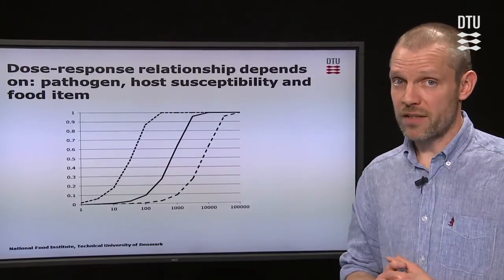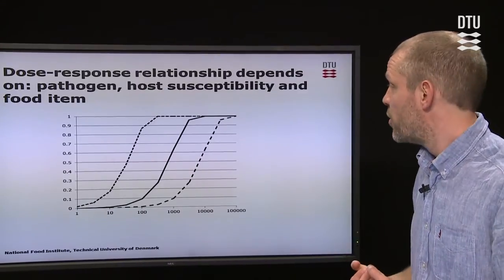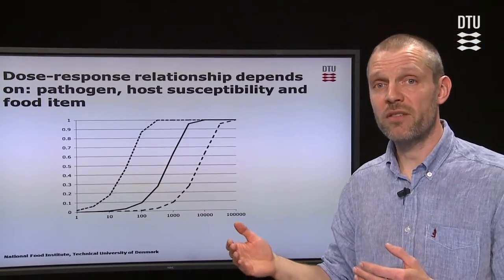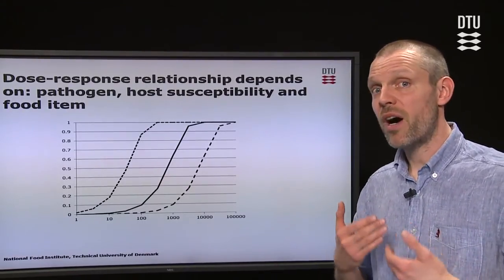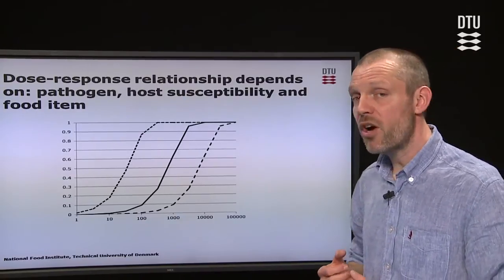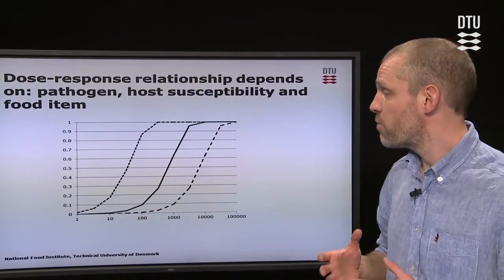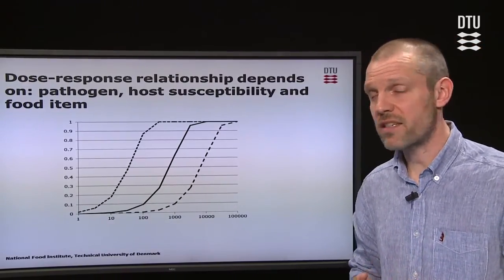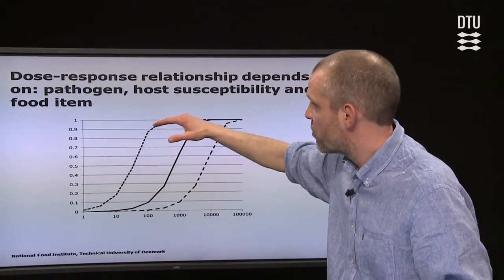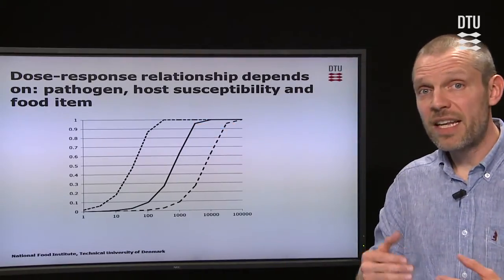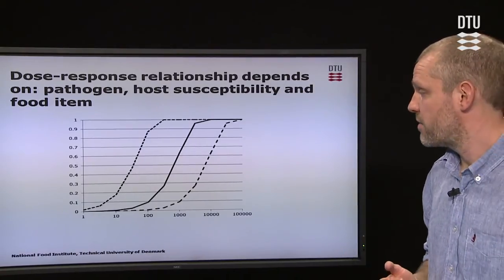And then finally we have the food item. If you have the same pathogen and the same host, the food item carrying the pathogen from the mouth to the intestine — meaning the pathogen has to pass the gastric acid — can have an influence. We know from experience that fatty food has a very protective effect for the pathogen against gastric acid. So if you have fatty food, the dose-response relationship shifts down, whereas with less fatty food, the curve moves upward, giving a less protective situation.